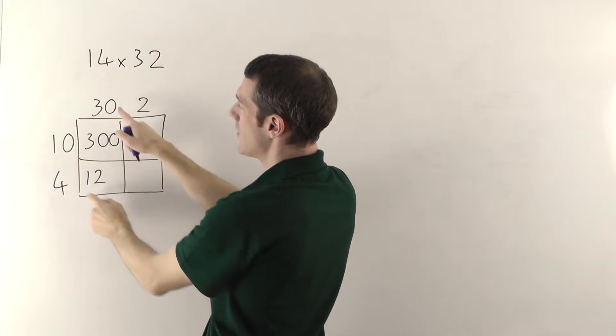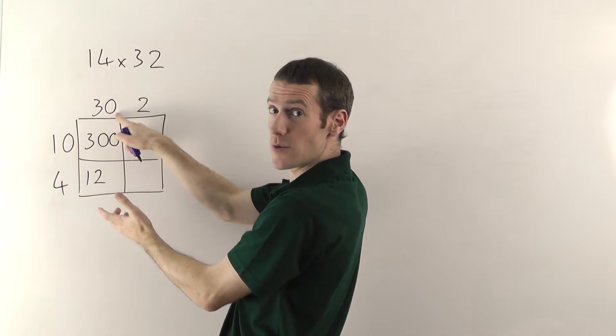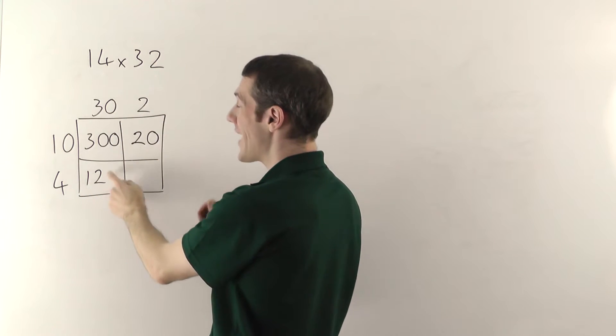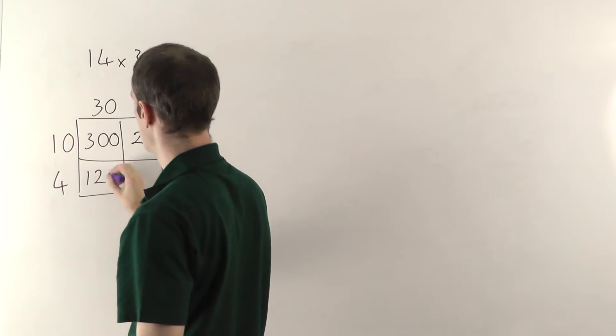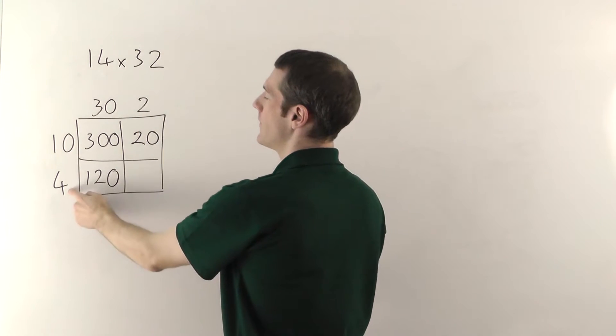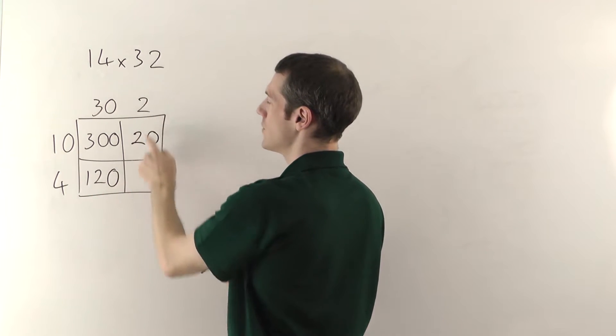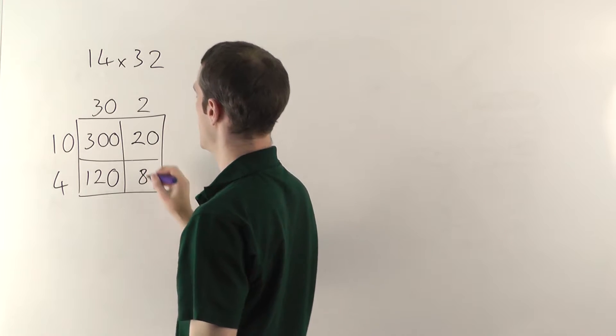I've got no zeros here, one zero here, so one zero altogether. So you add one zero on the end — there it is, 120. And then 4 times 2 gives you 8.